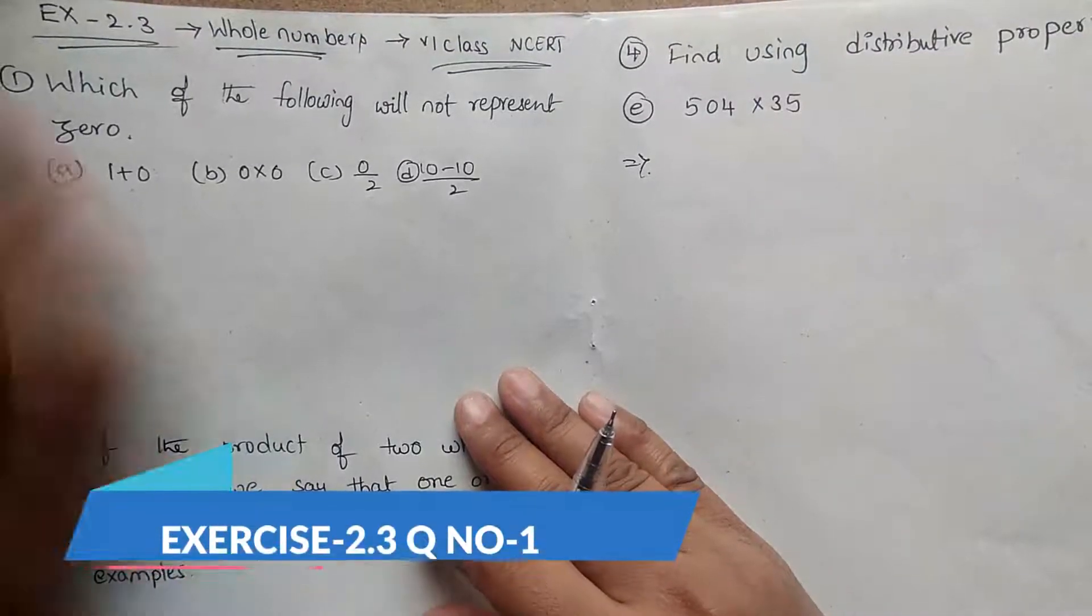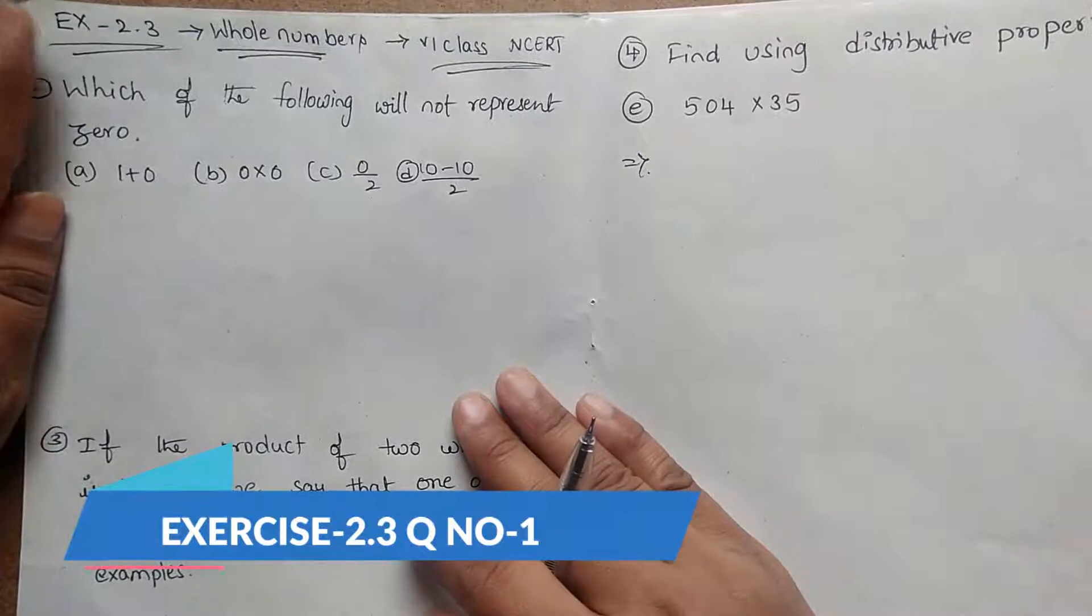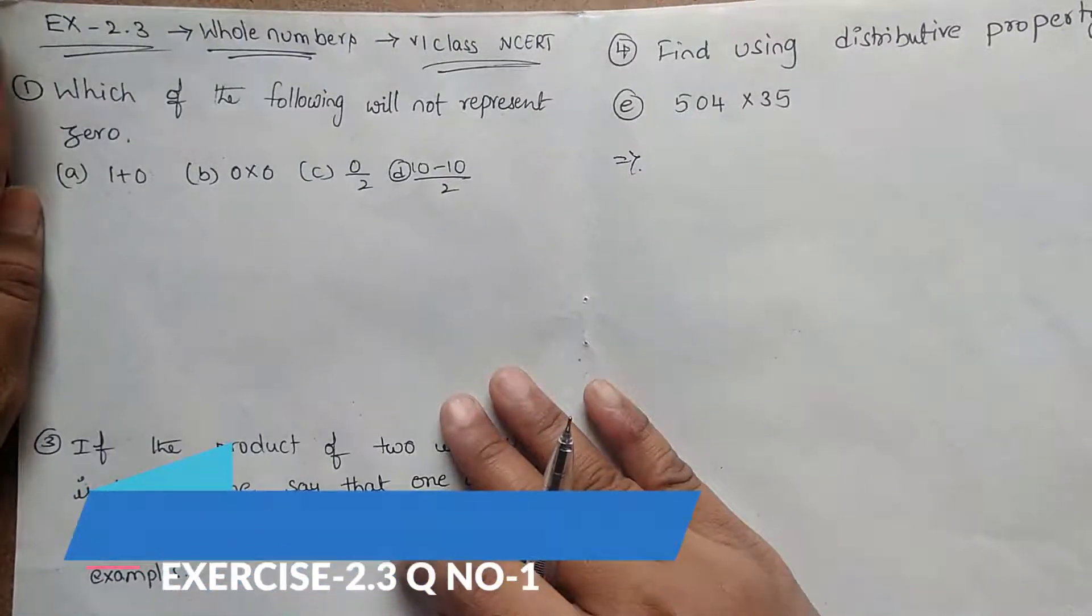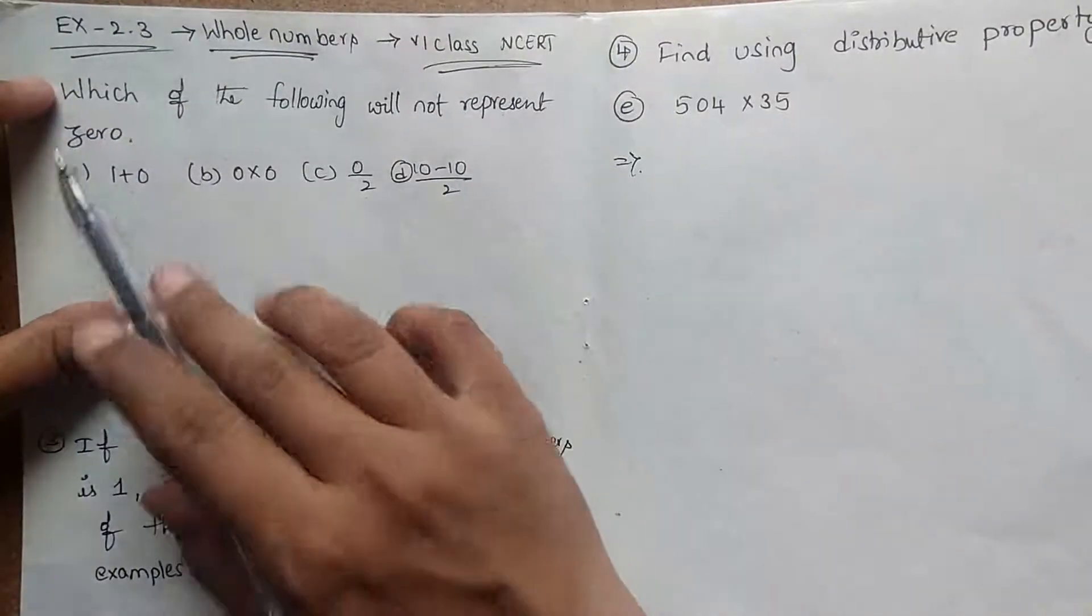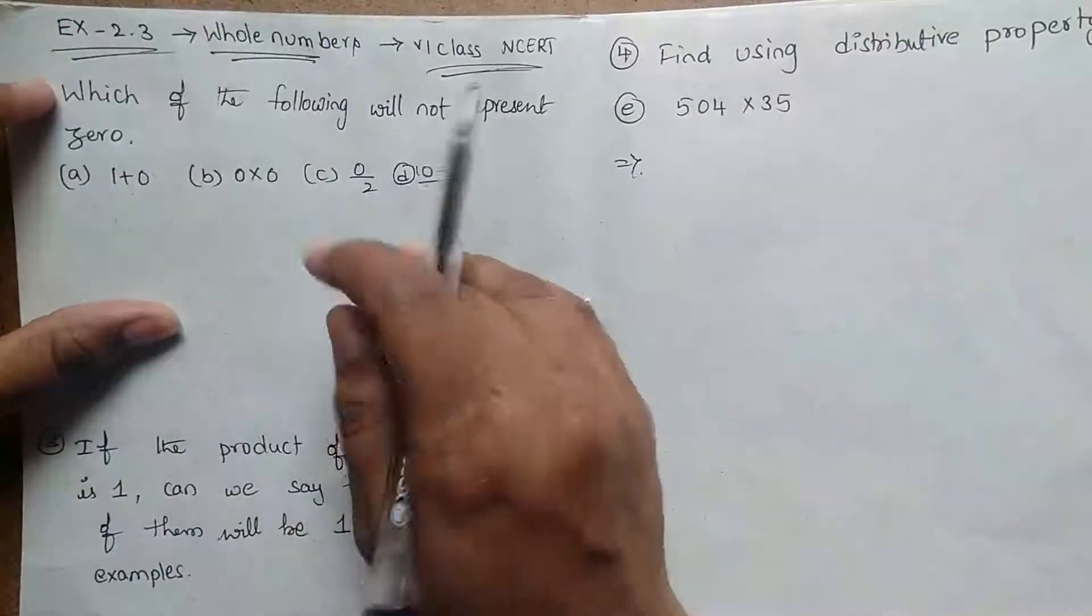Hi, hello, welcome to Maths Medium. Today I came with Exercise 2.3, whole numbers, class 6 NCERT. Question number 1: Which of the following will not represent zero? Here there are four options.